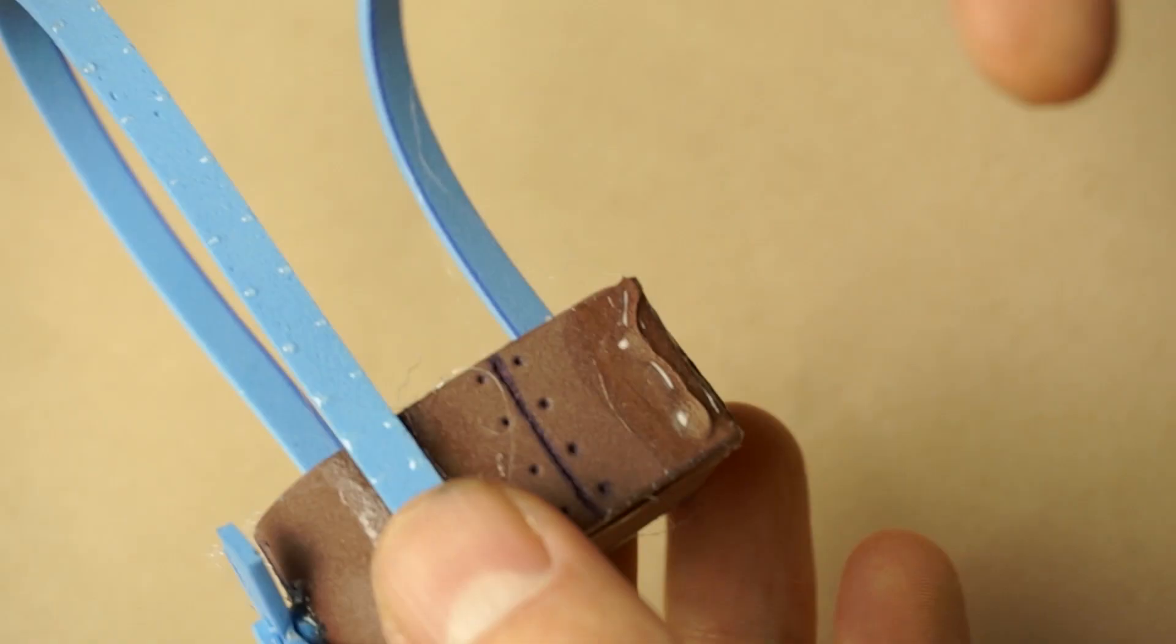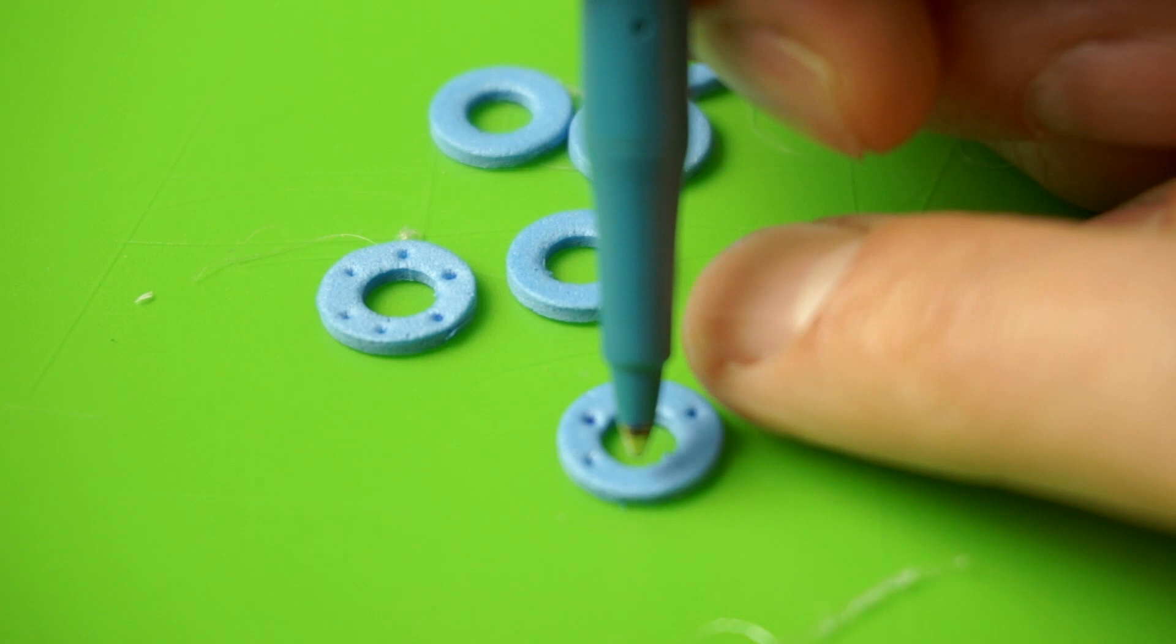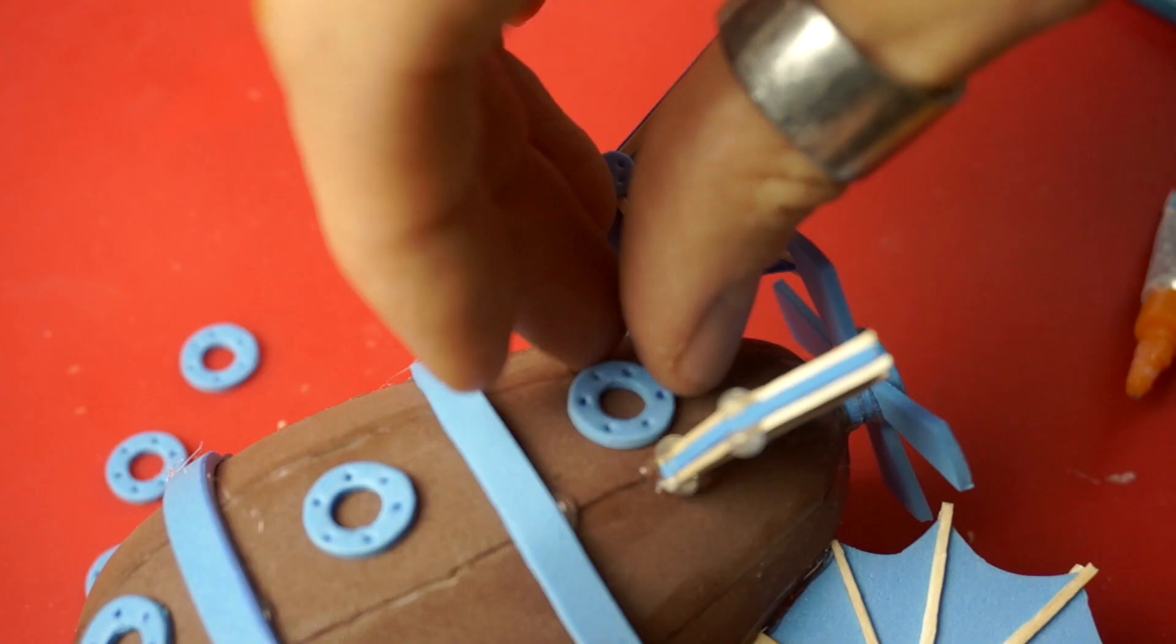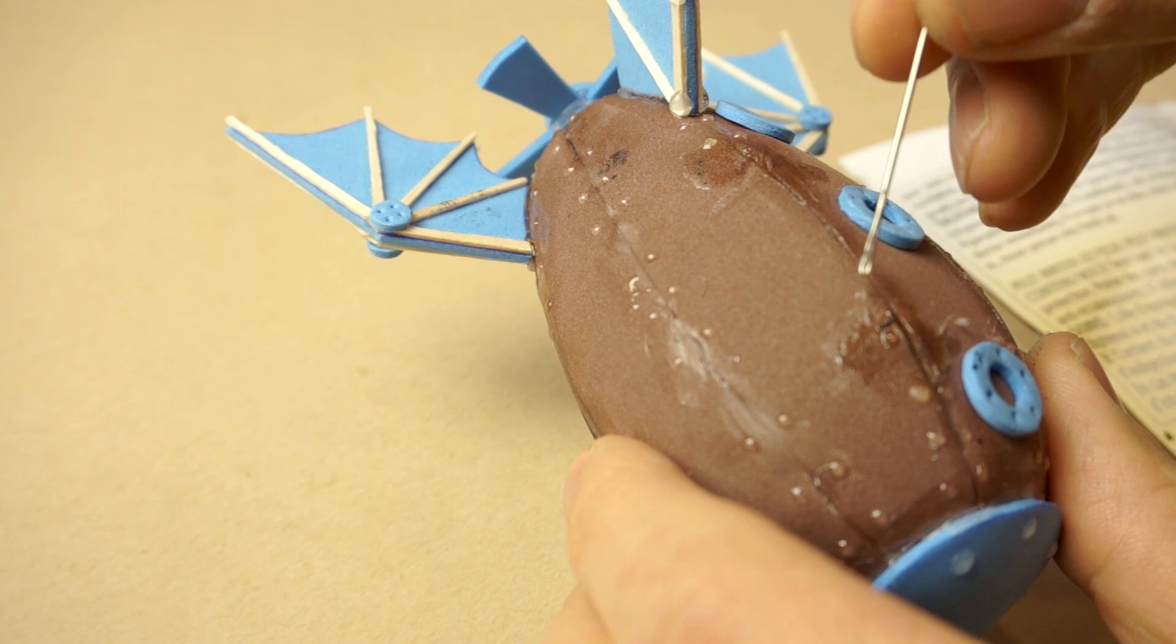Once the epoxy is dry, you can glue the straps on in their position, remembering that the longer strap goes in the front. Now it's time to create the portholes. I used a 12 millimeter punch for the outside and then a six millimeter punch on the inside. Again, using the handy dandy pen to make some rivet marks. Slide the gondola into position so you can figure out where to glue the portholes. I used super glue to glue them into place.